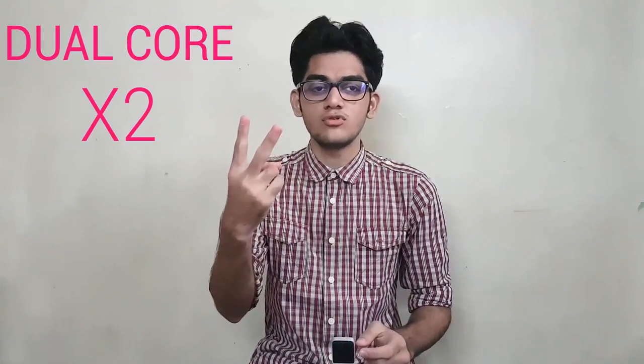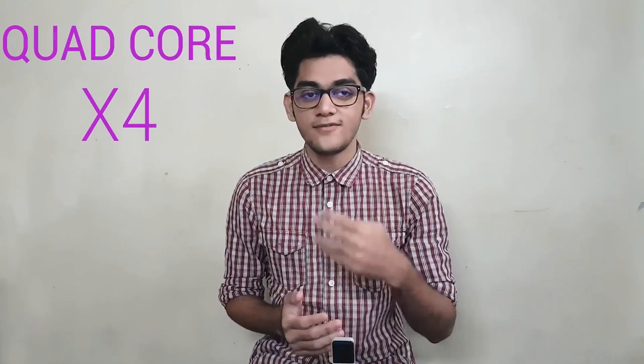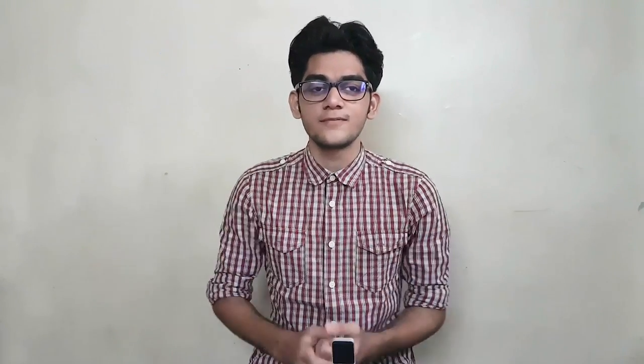In dual-core we have 2 cores, in quad-core we have 4 cores, in hexa-core we have in total 6 cores, and in octa-core we have in total 8 cores. Your next question would be why did I say 'in total'? Well, in hexa-core and octa-core we have 2 different processors. In hexa-core we have a quad-core processor and a dual-core processor. In octa-core we have 2 quad-core processors. Hexa-core and octa-core are frequently used processors for the big.LITTLE structure.